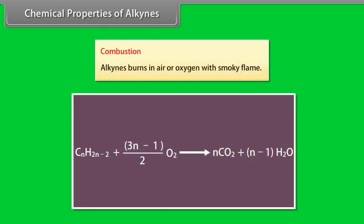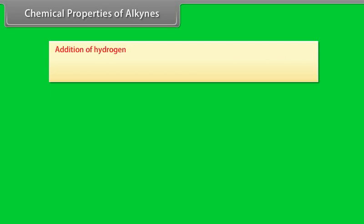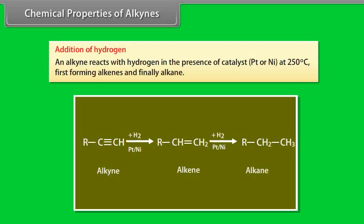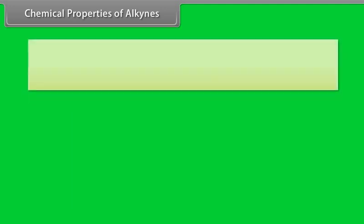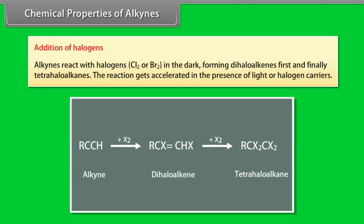Chemical properties of alkynes. Combustion: alkynes burn in air or oxygen with a smoky flame. Addition of hydrogen: an alkyne reacts with hydrogen in the presence of a catalyst — Pt or Ni — at 250 degrees centigrade, first forming alkenes and finally alkanes. Addition of halogens: alkynes react with halogens (Cl2 or Br2) in the dark, first forming dihaloalkenes and finally tetrahaloalkanes.